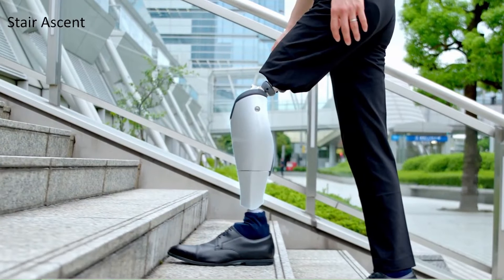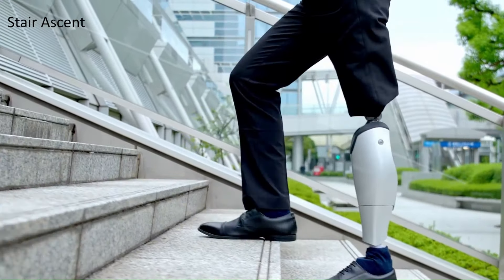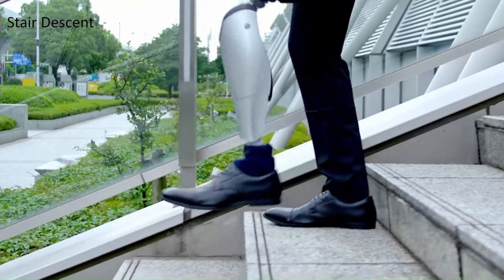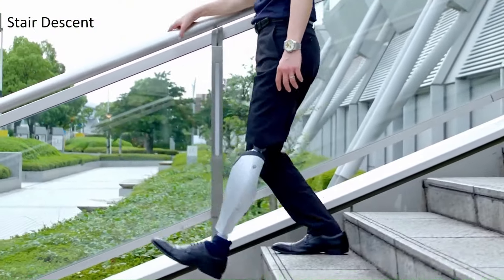Motor-powered knee. The BioLeg's knee joint is powered by a small motor, which helps to replicate the natural movement of a human knee. This makes it easier for users to walk, climb stairs, and stand up from a seated position.